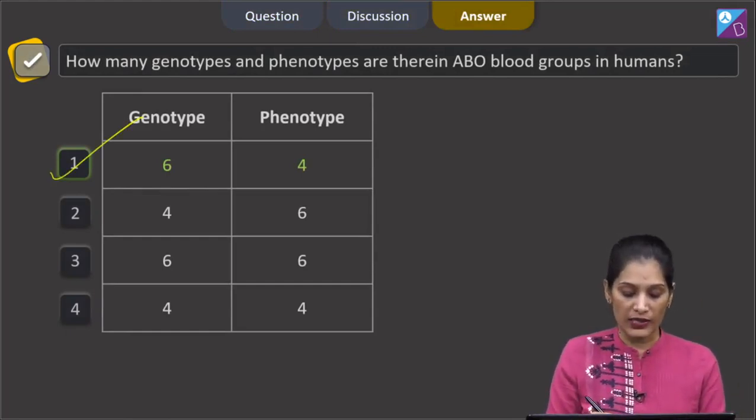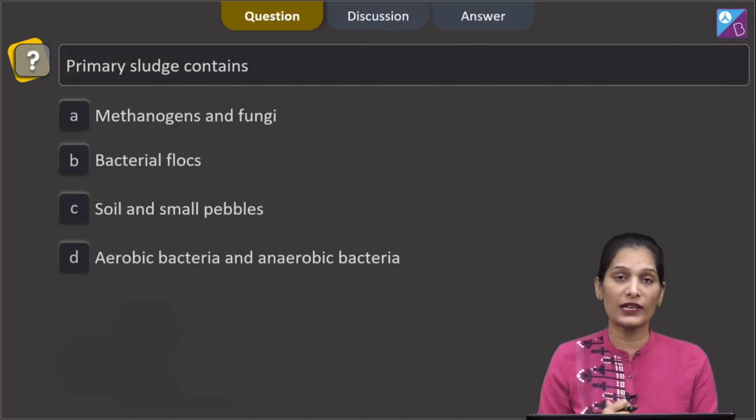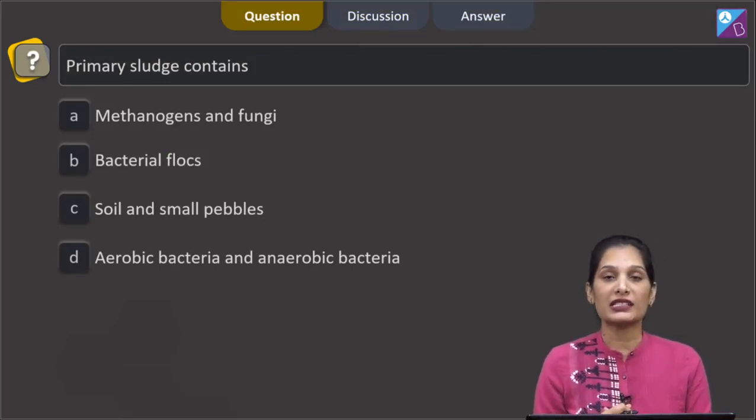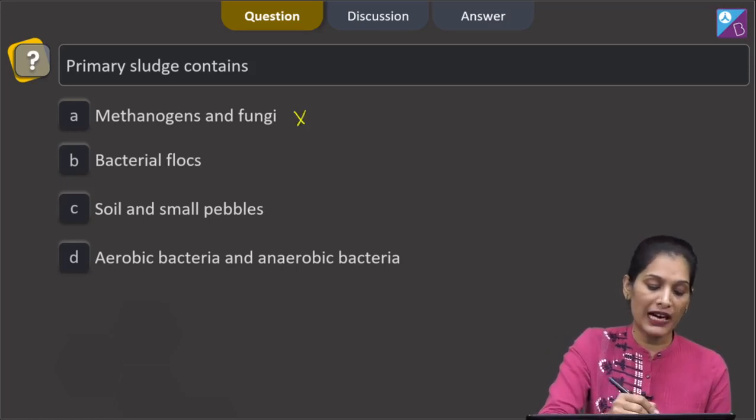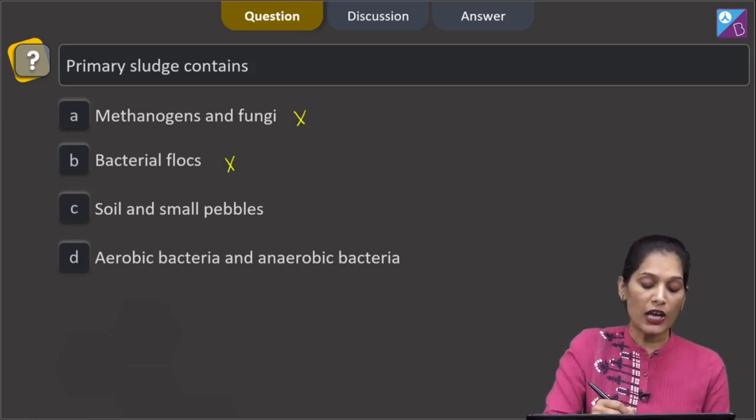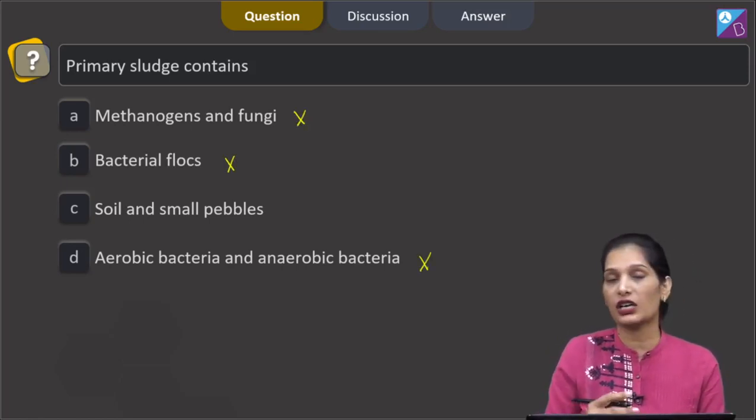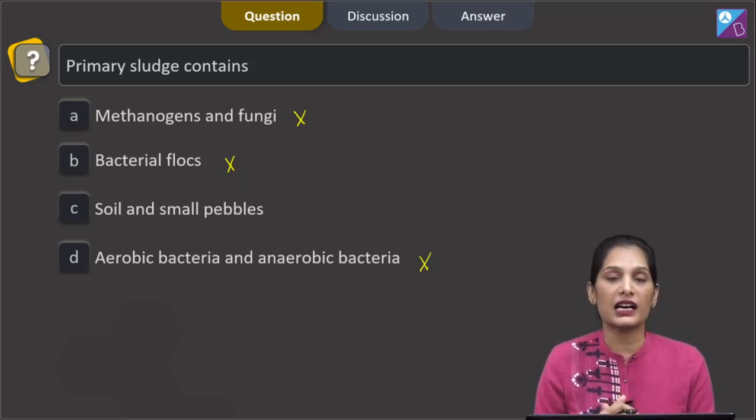Let us move to the next question. This question says primary sludge contains. Primary sludge is seen during the primary treatment of sewage. It contains methanogens and fungi? No. Bacterial flocs? No. Aerobic bacteria and anaerobic bacteria?